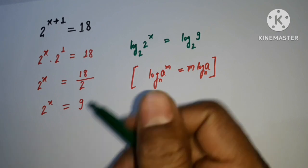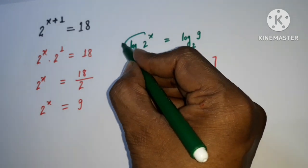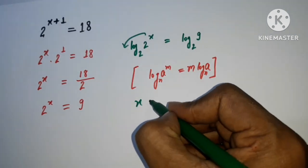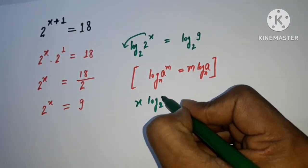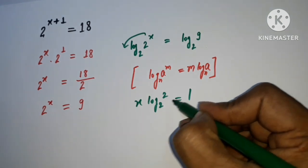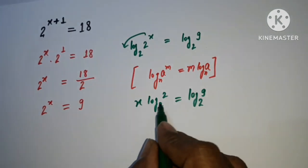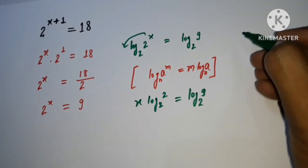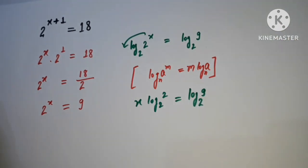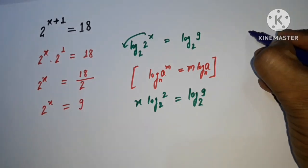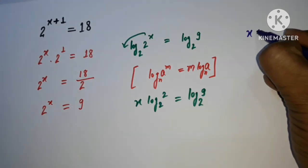So this will give us x will come here in front. So x times log base 2 of 2, and here log base 2 of 9. So here this will become 1. So x times 1.